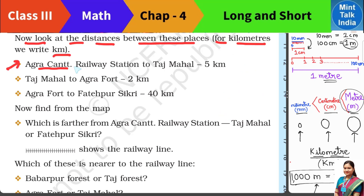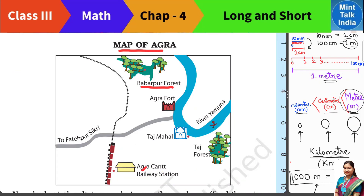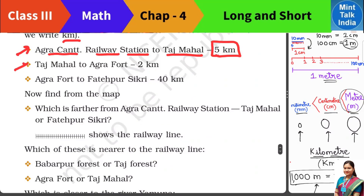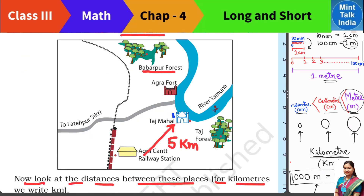The first statement: the distance from the railway station to the Taj Mahal is 5 kilometers. The second statement: the distance from the railway station to Agra Fort is 2 kilometers.